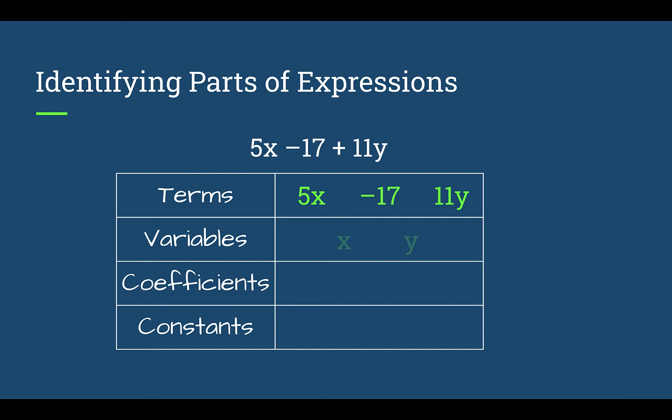In this same expression, we have two variables, an x and a y. So the 5x have the x variable, the 11y had the y variable, the 17 doesn't have a variable.